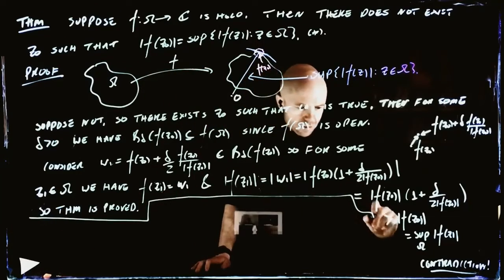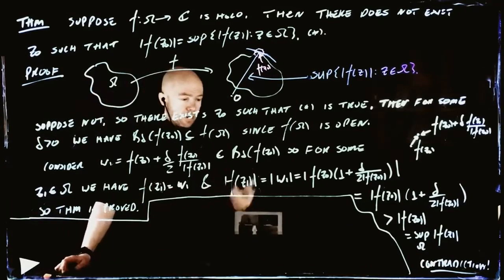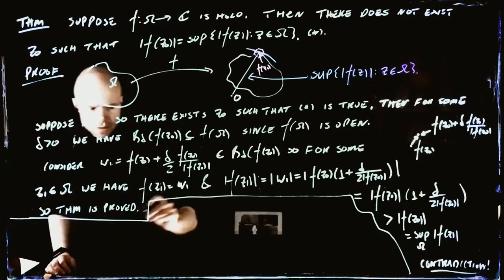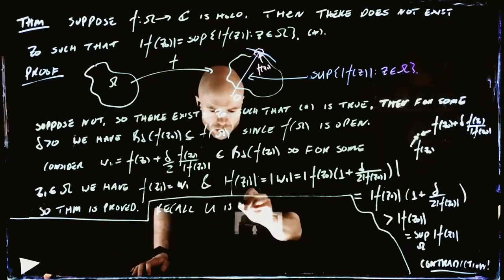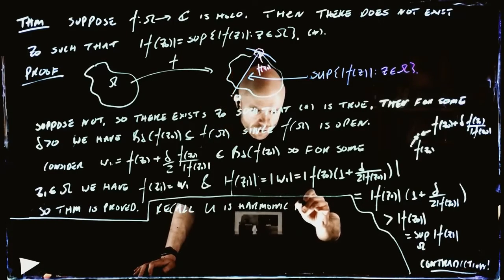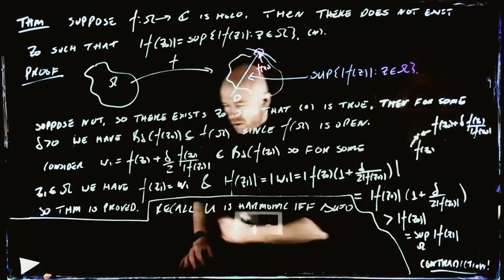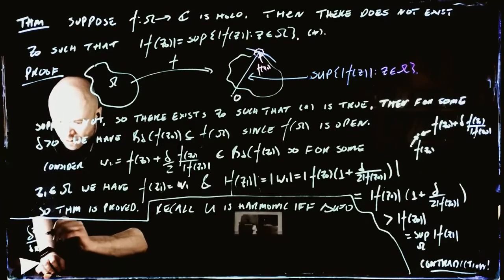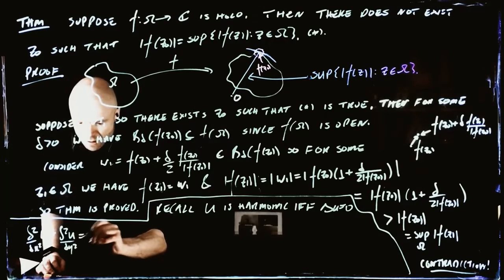This is called the maximum modulus principle, and it's actually a special case of a more general theorem for harmonic functions. So recall: u is harmonic if and only if the Laplacian is equal to zero — i.e., in two dimensions, the second derivative with respect to x of u plus the second derivative with respect to y of u is equal to zero.